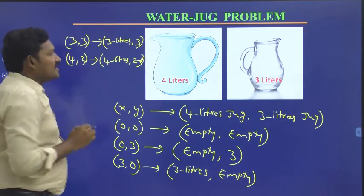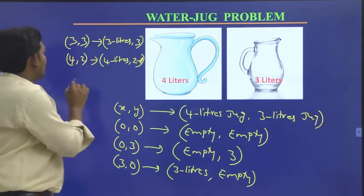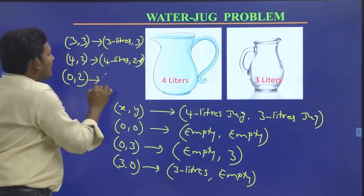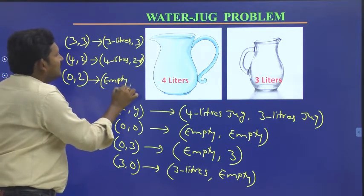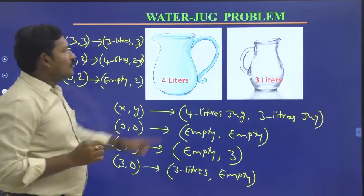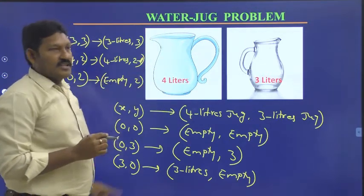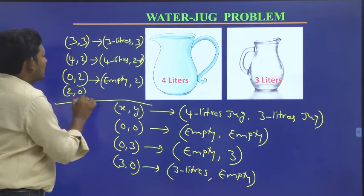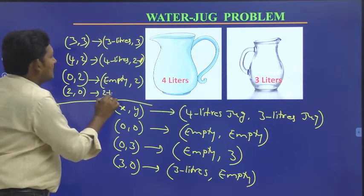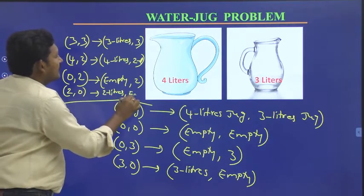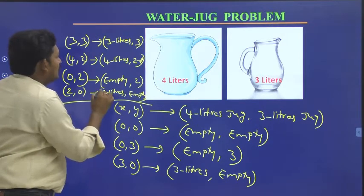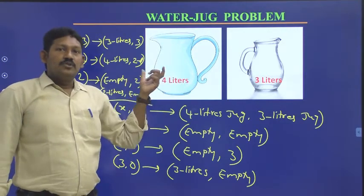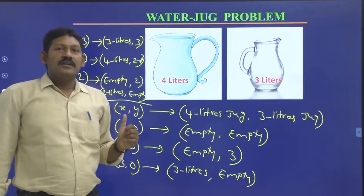Now empty the four liter jug. It is now at zero, while the three liter jug still has two liters of water. Now pour these two liters into the four liter jug — so now we have two liters in the four liter jug and the three liter jug is empty.